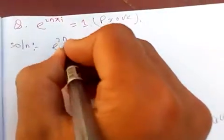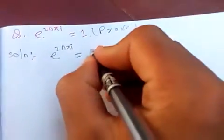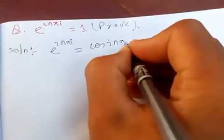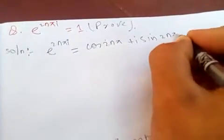So e to the 2nπi is, from Euler's formula we know it is cosine of 2nπ plus i sine 2nπ.